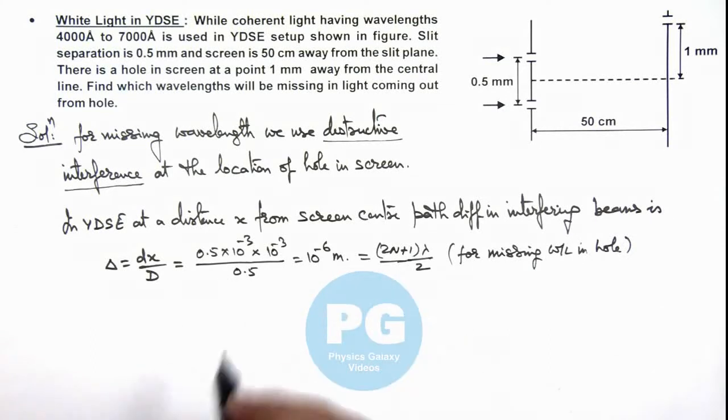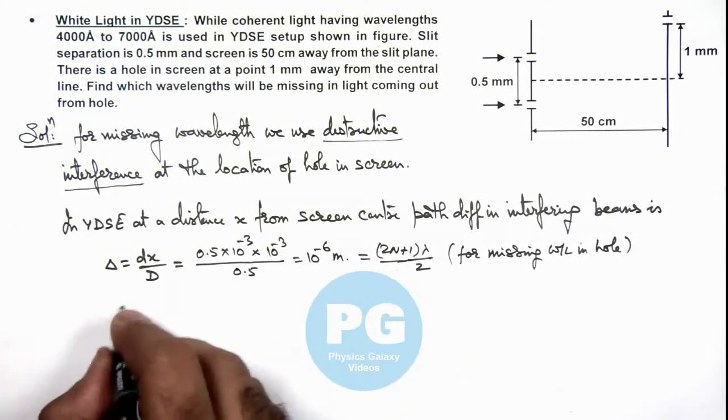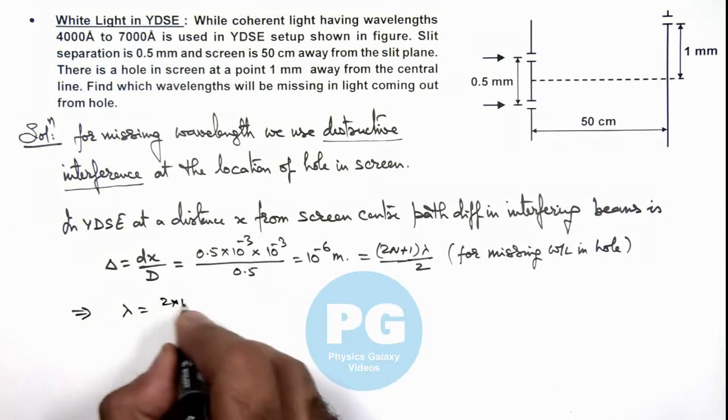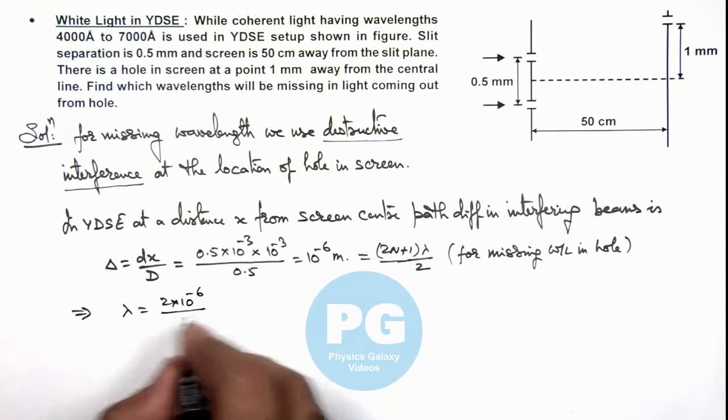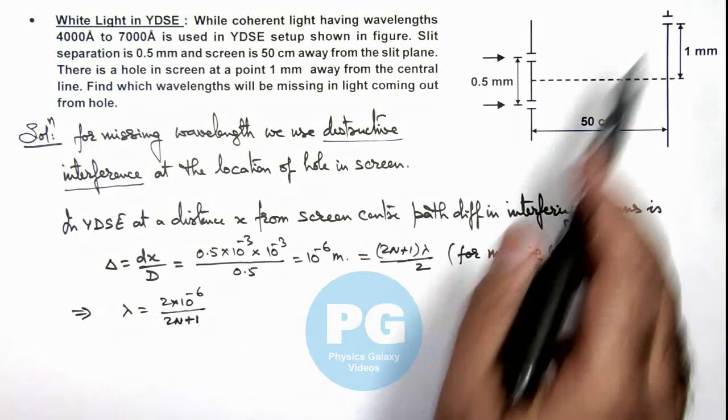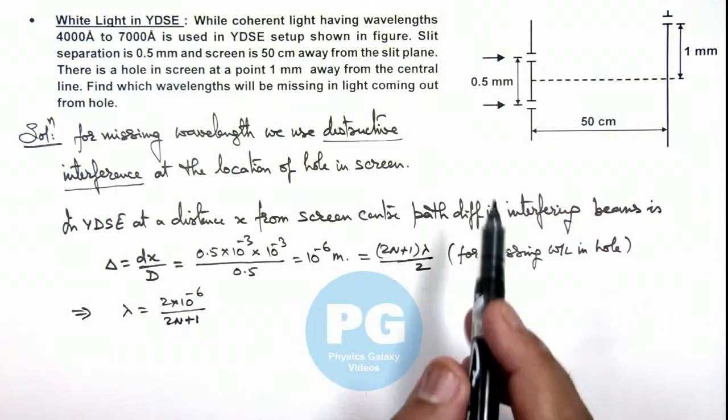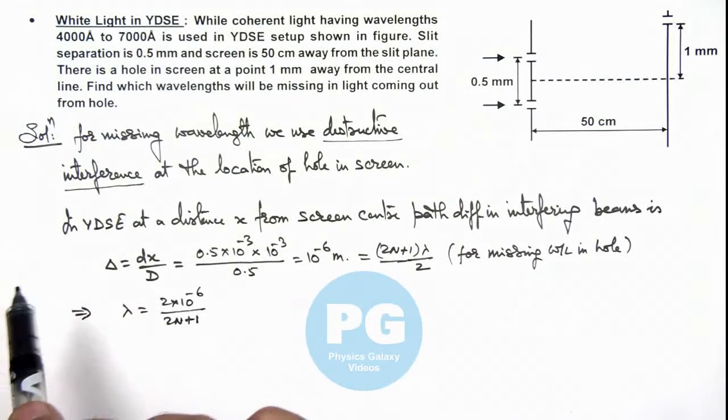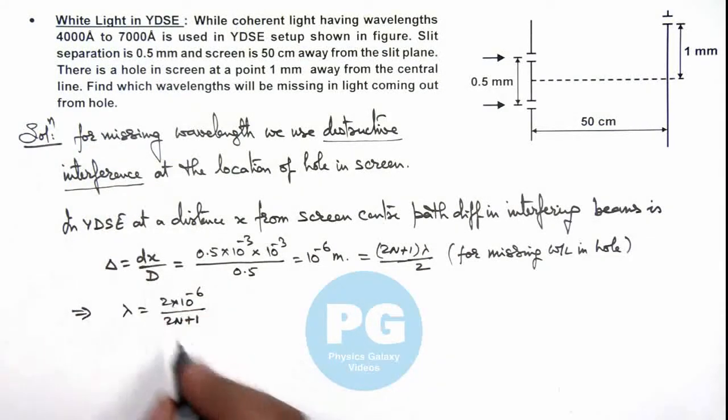On slightly rearranging the terms, we'll get the value of lambda equal to 2 × 10⁻⁶ divided by (2n+1). Now here we can see this is the wavelength which is missing at this point, and we are given that the light has wavelengths from 4000 to 7000 angstroms, so we can find out the limit on this value of n for all these wavelengths.